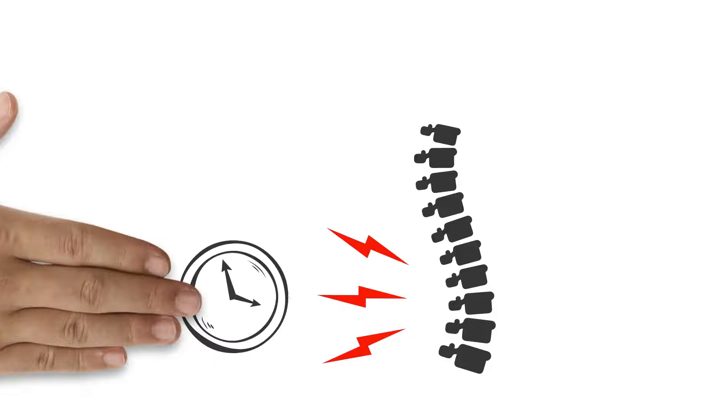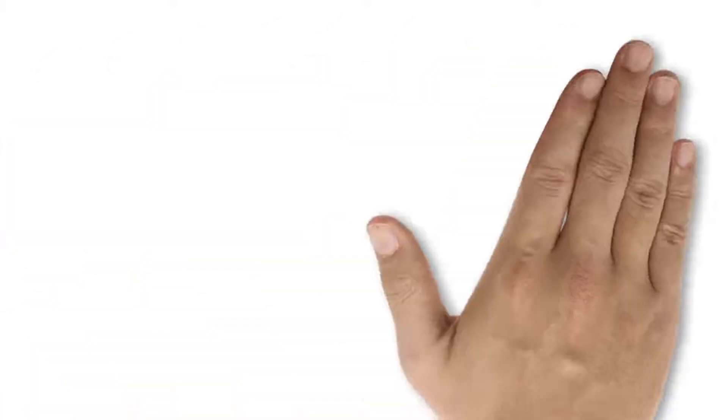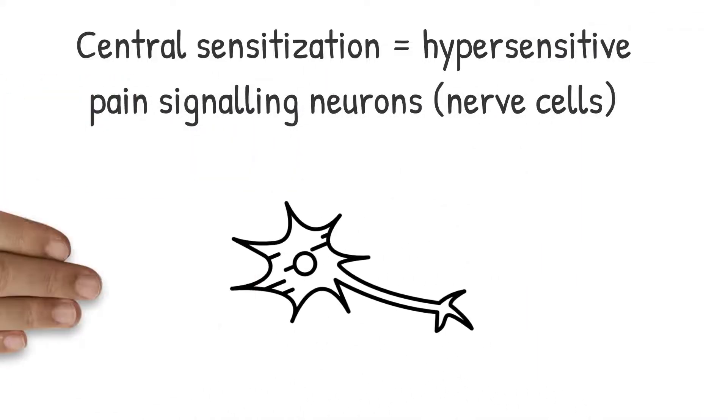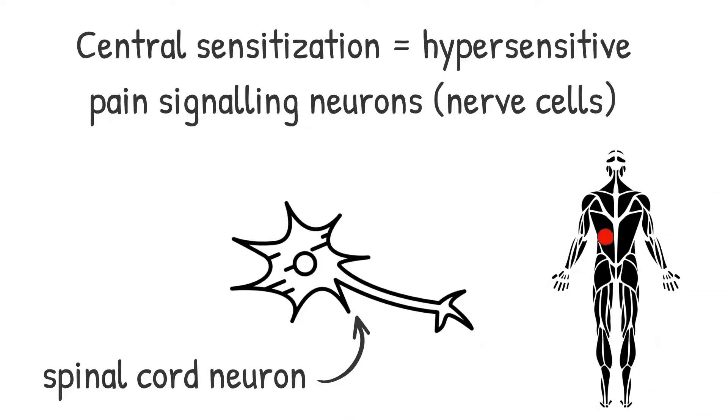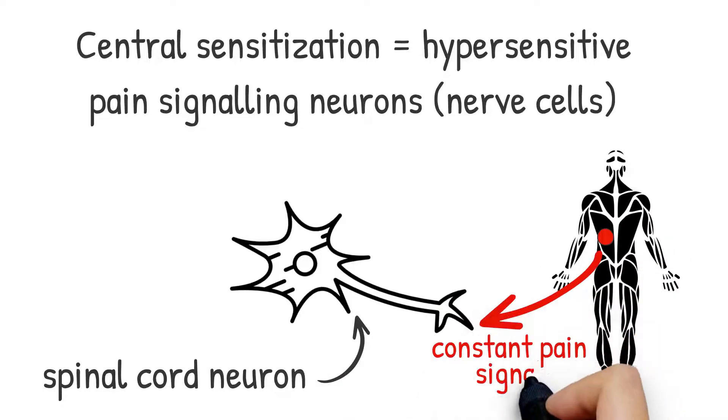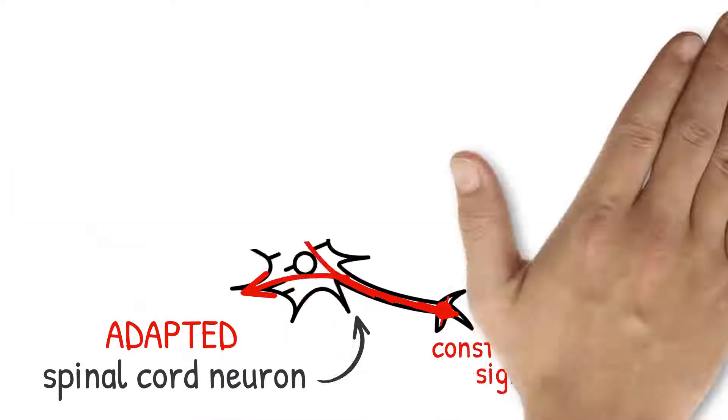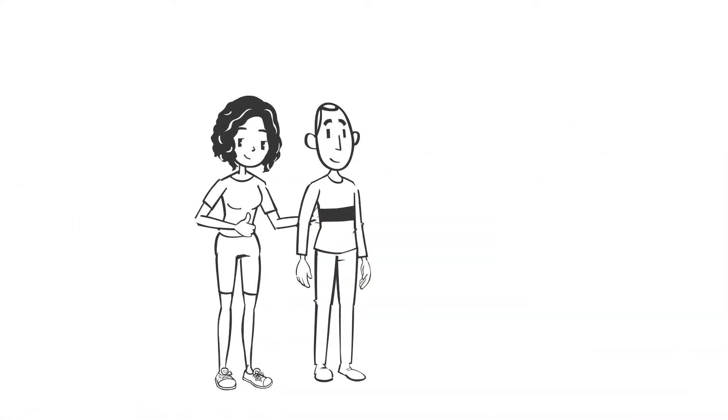When the spine is bombarded with pain signals for a long time, a state of central sensitization can develop. This is a state of hypersensitivity of neurons within the central nervous system. When neurons in the spinal cord become so used to receiving pain signals from an injured muscle, they can actually adapt their state to receive and transmit pain signals more easily. Once Bob's spine has become sensitized, even a gentle pat on the back can become painful.